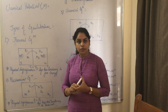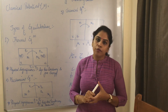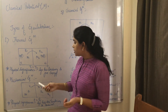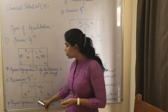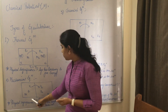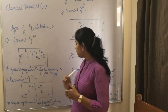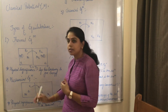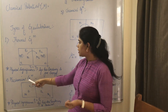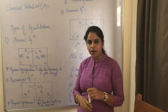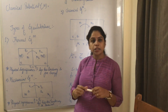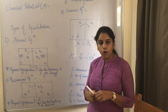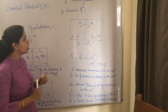Now let's talk about mechanical equilibrium. In this, volume is transferred from low pressure to high pressure, and this continues until P1 is equal to P2. P1 is the pressure of system 1 and P2 is the pressure of system 2. Once the pressure of both systems becomes the same, we can say the system is in mechanical equilibrium. The physical significance is that the system has a tendency to take volume.